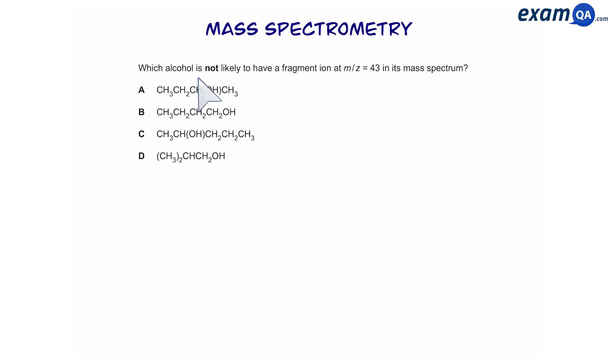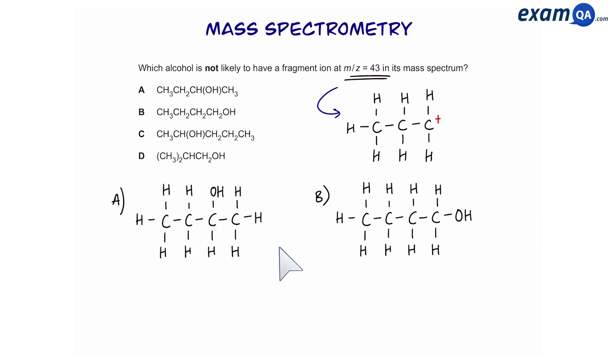Here's another question. Which alcohol is not likely to have a fragment ion at 43 in its mass spec? Now, remember, we said that some ions we have to memorize. For example, 15 was CH3, 29 and also 43. So, let's draw the structure of A, B, C and D and see which one does not have an ion of 43. Alcohol A, B, C and D.